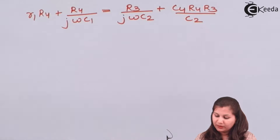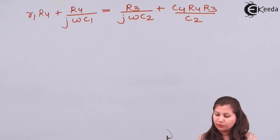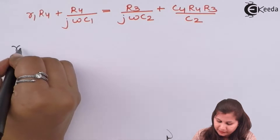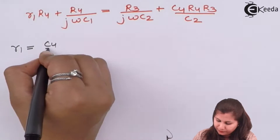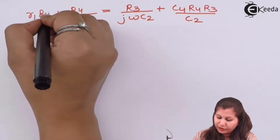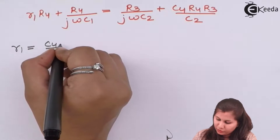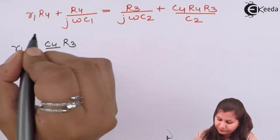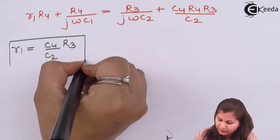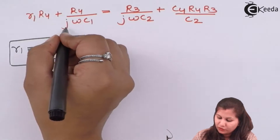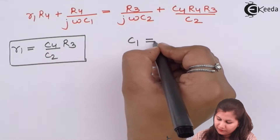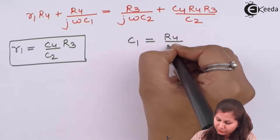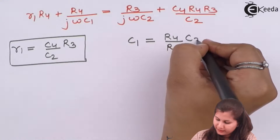These equations contain both real and imaginary parts. Equating the real parts gives R1 = (C4/C2)·R3, where R4 cancels out. Equating the imaginary parts gives C1 = (R4/R3)·C2.